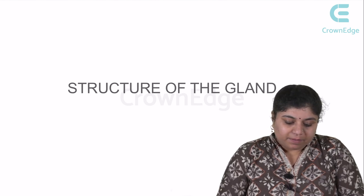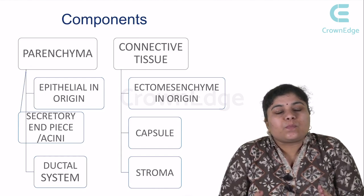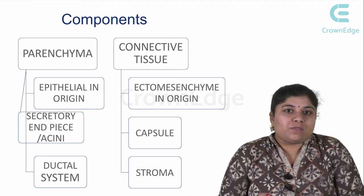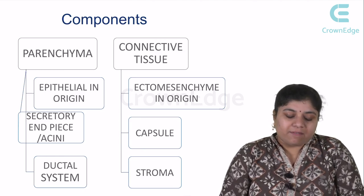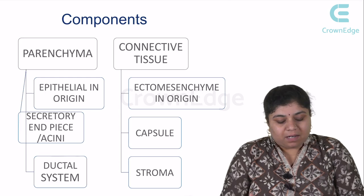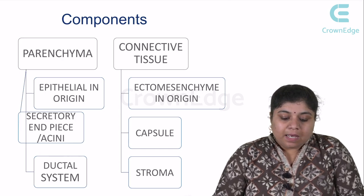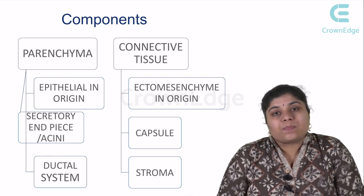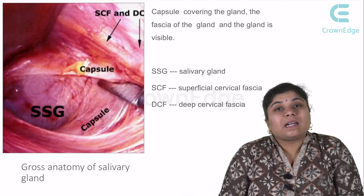Now, let's look at the structure of the salivary gland. Basically there are two components: parenchyma and connective tissue. The parenchymal part is epithelial in origin, while the connective tissue is ectomesenchymal in origin. The parenchymal parts are the secretory end pieces, also called the acini, which are the terminal end pieces, and the ductal system. The connective tissue forms the capsule and the stroma.